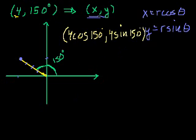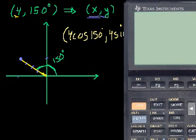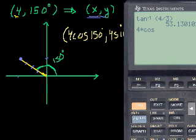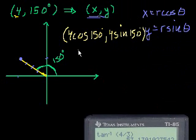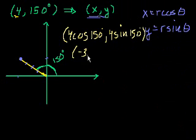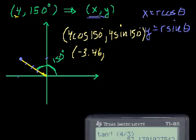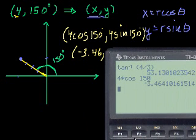And now we can get the calculator out. So let's see. What's the cosine of 150? Well, I'll just write it out. So 4 times the cosine of 150. And make sure your calculator is in degree mode. You don't want to make it think you're saying 150 radians. So it's minus 3.46. So the x-coordinate is minus 3.46. And what is the y-coordinate? It's 4 times sine of 150 degrees, which is equal to 2.